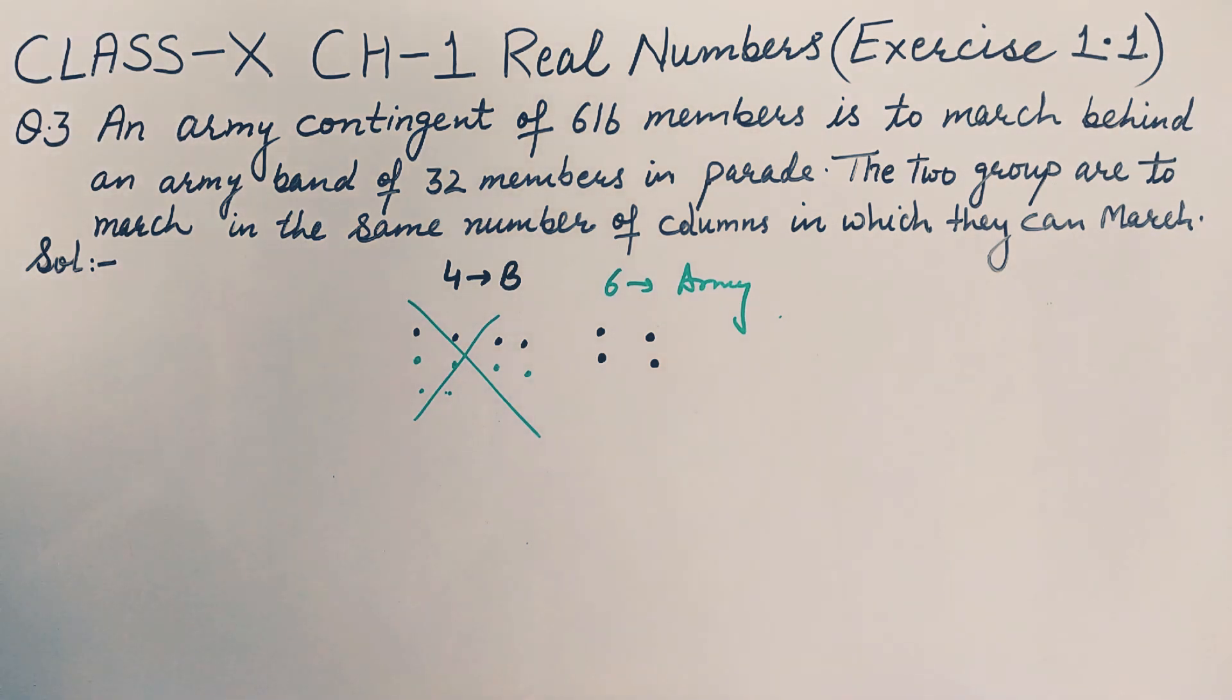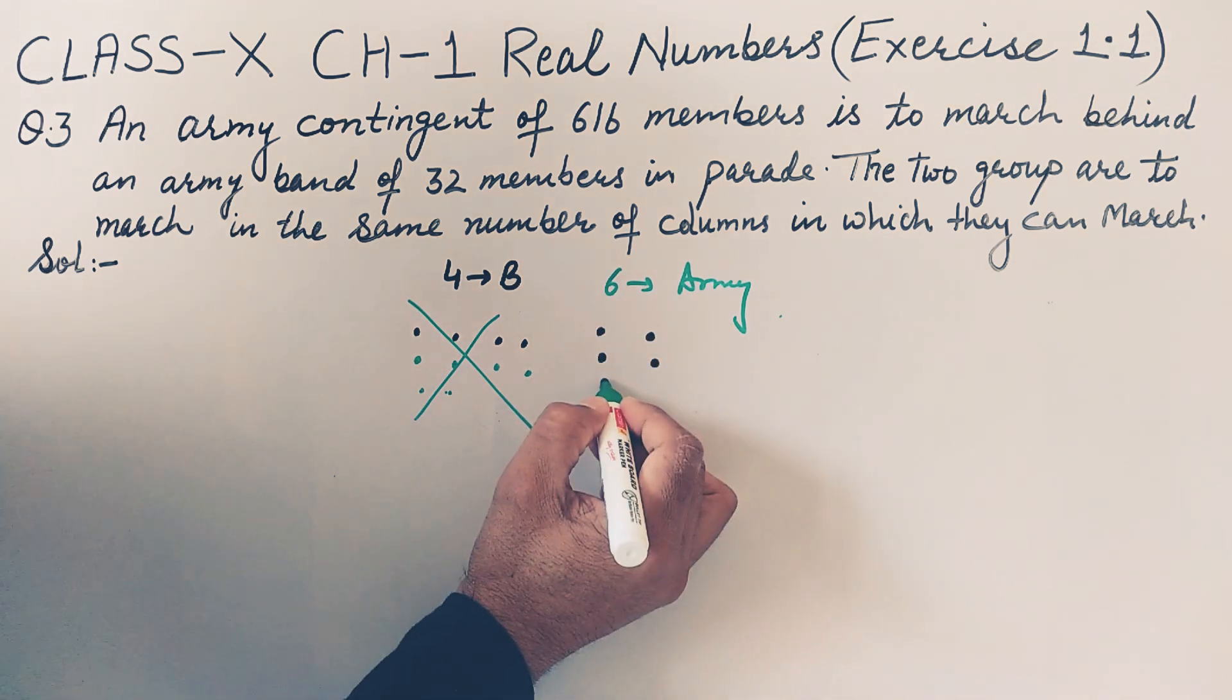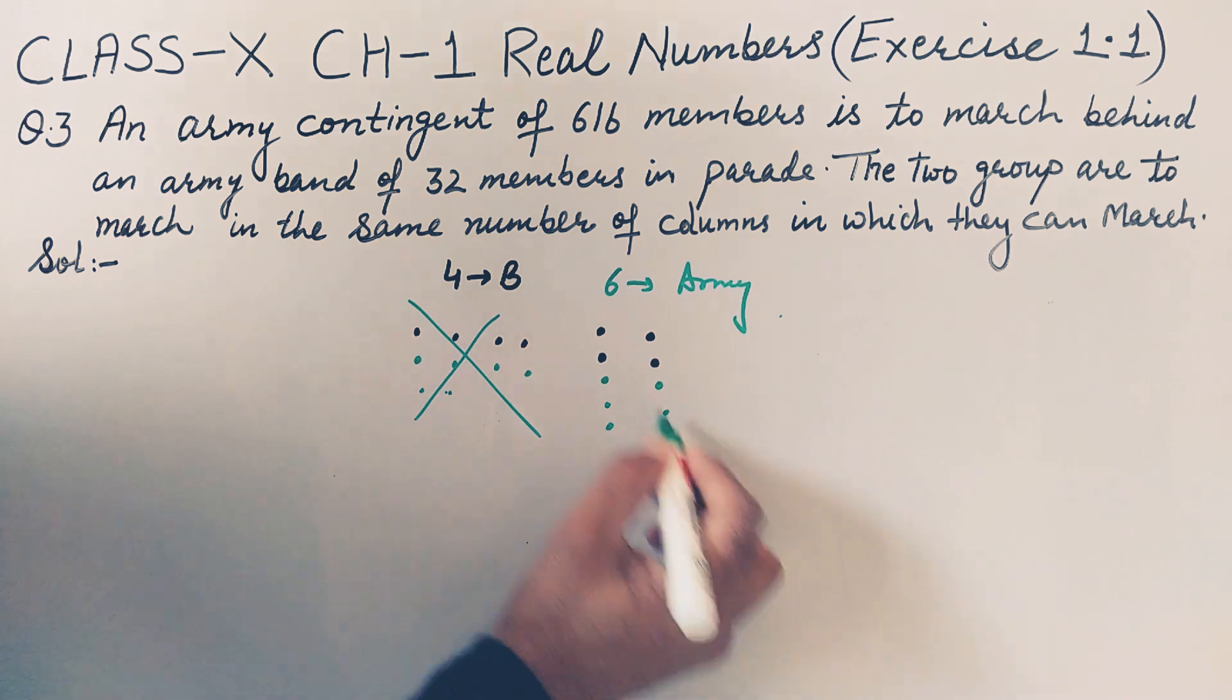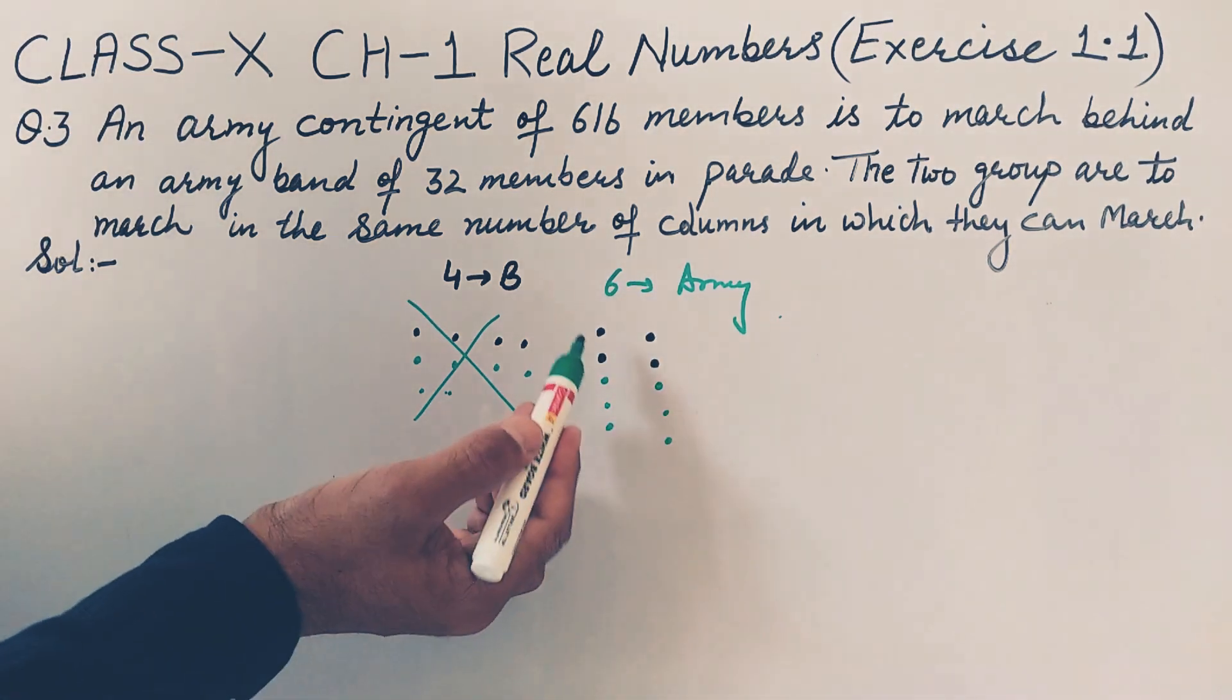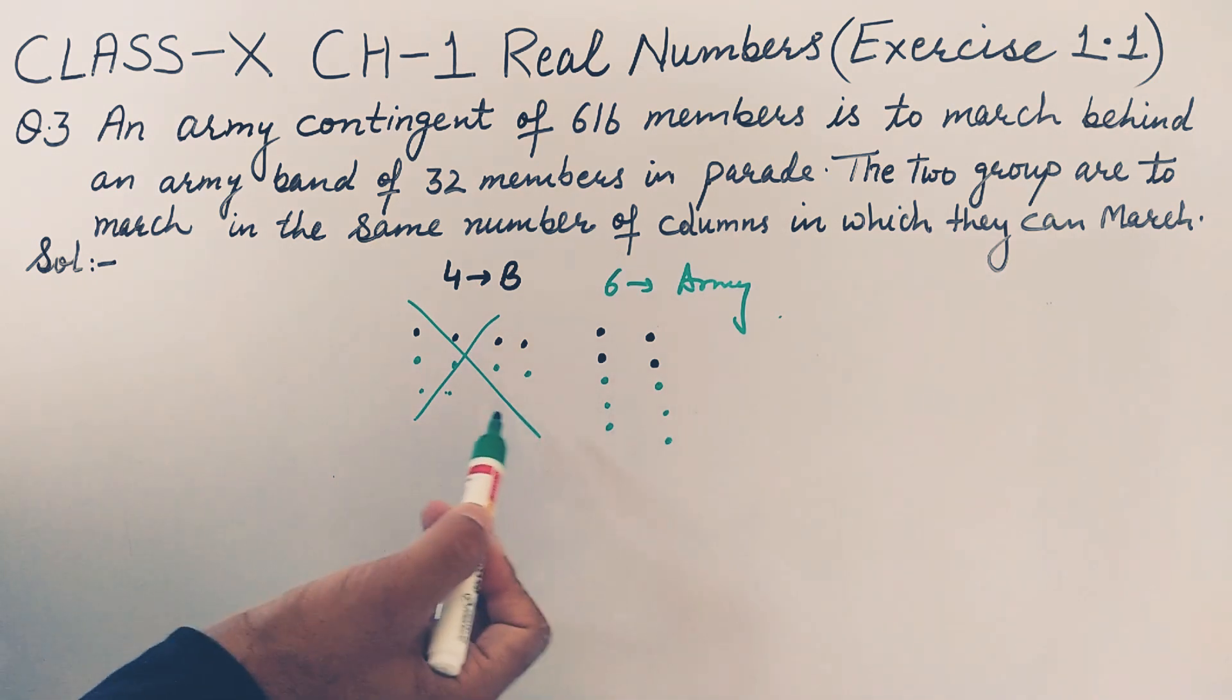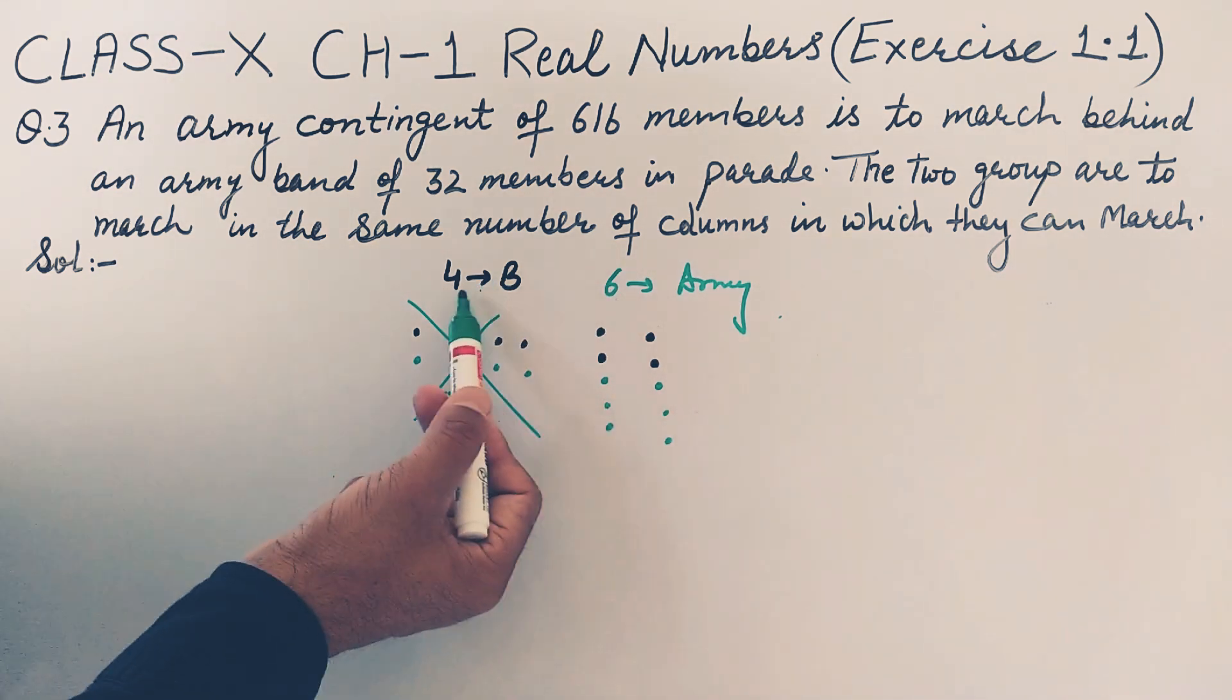Let's take army band members moving in two columns. Now let's put these army contingent also in these two columns. Six are there: one, two, three, four, five, six. It means these are completed. Same number of columns for these, two columns are there.